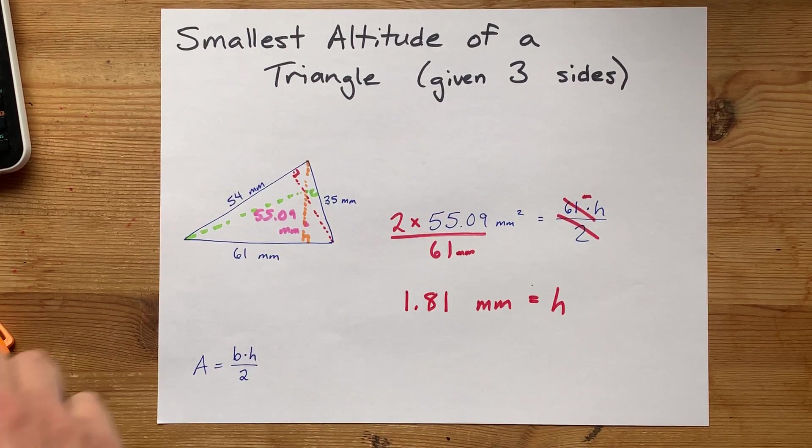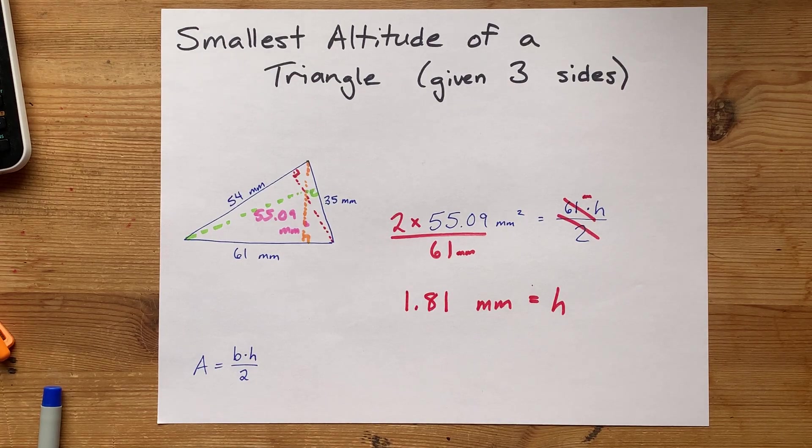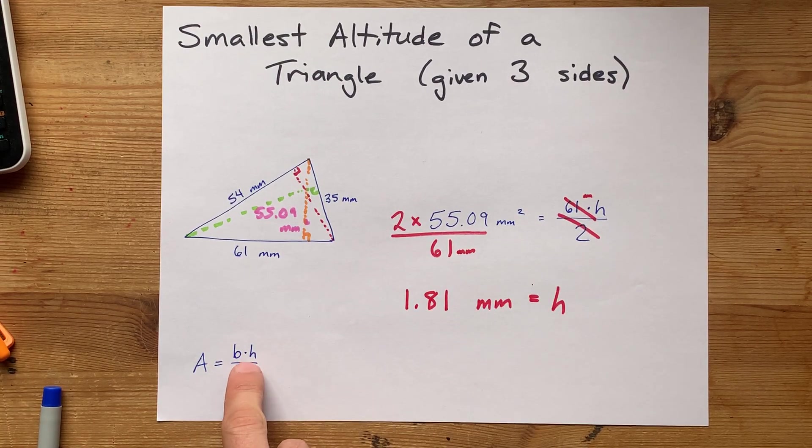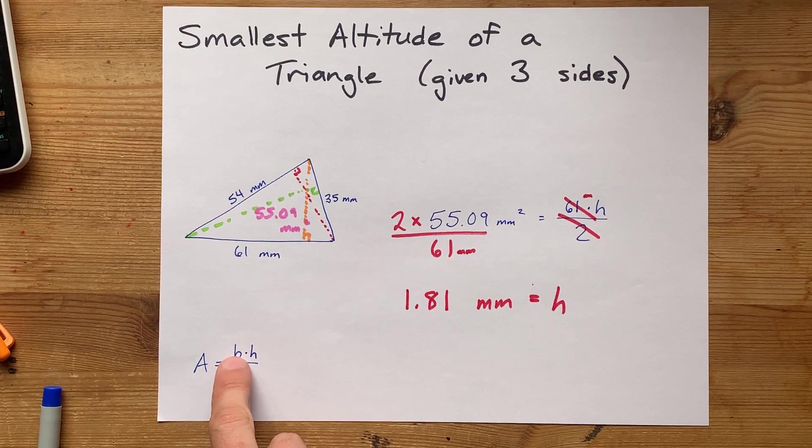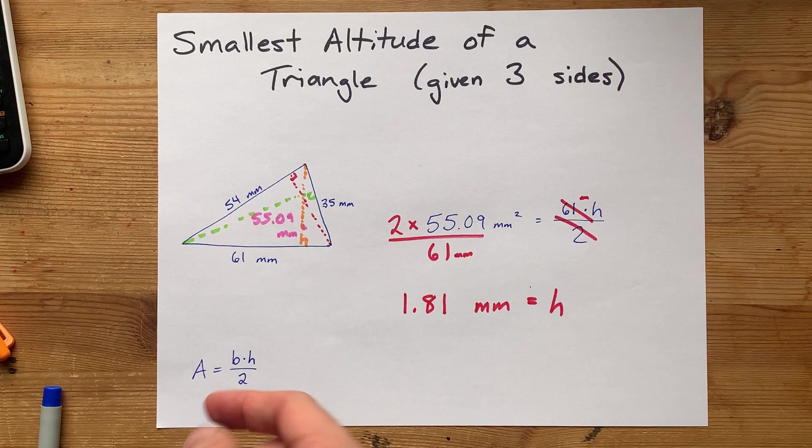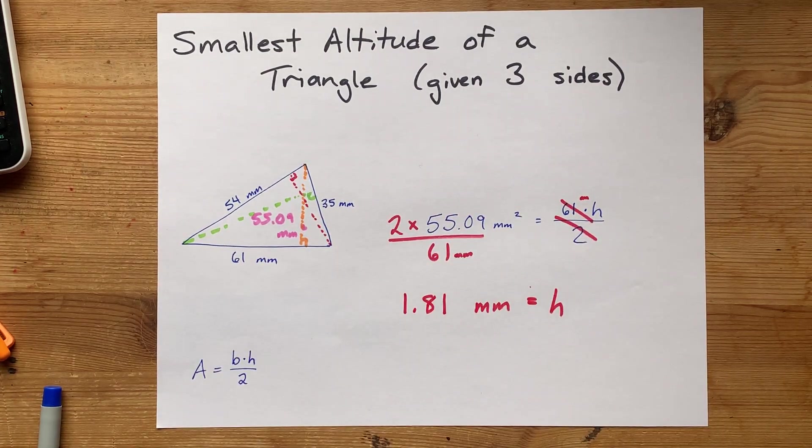All it took was knowing the area, which I do admit was not in this video, and then using the fact that area is base times height divided by 2, and to minimize H, you maximize B. So, you select the longest of the three sides to get the smallest altitude. Very nice. Thanks for being with me, and best of luck.